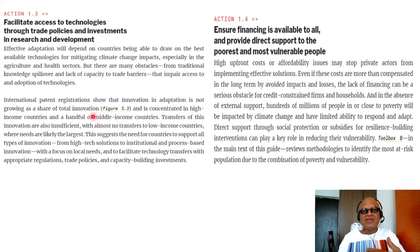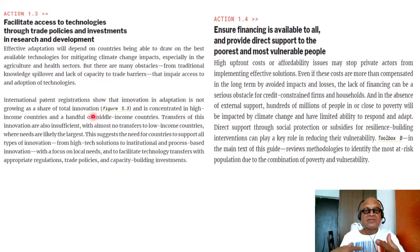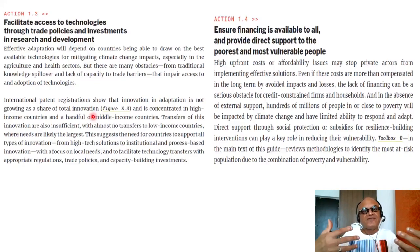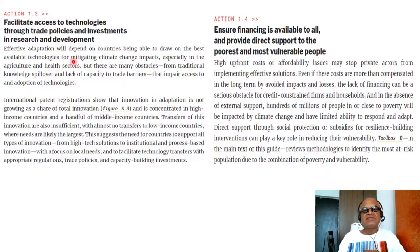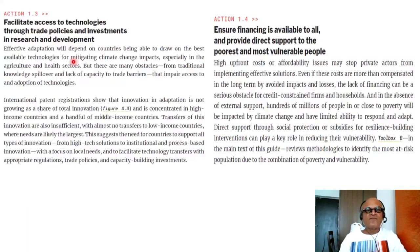Action 1.3. Adaptation is a social science, and in social science the problem statements and solutions tend to be kind of descriptive — sometimes discursive. So it's necessary to read a lot of text and understand the concepts; it's not always full of equations like in Dynamics courses. Action 1.3 is about facilitating access to technologies through trade policies and investments in research and development. These sound obvious, yet they need to be codified in terms of how information is made available to people and firms to stay ahead of climate risks.